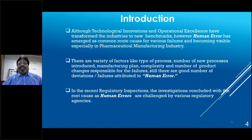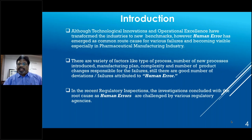Although technological innovations and operational excellence have transformed the industry — with automation like SCADA systems, HMIs, and LIMS in quality control — human error has emerged as a major cause of failures in pharma manufacturing. New complex processes and manufacturing plan changes add to failures. A good number of deviations and failures are still attributed to human error, and investigations concluding with human error as root cause are being challenged by various regulatory agencies.